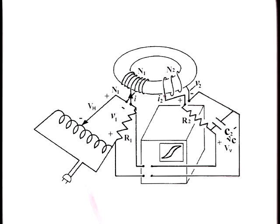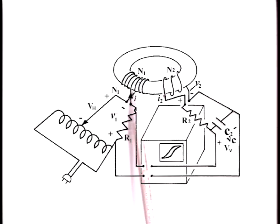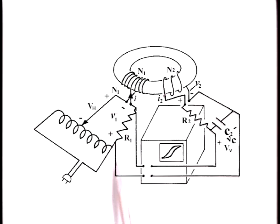Here is the excitation winding. The current is supplied by this variac. The voltage drop across the small resistance in series with the driving winding is used to record the driving current I. This voltage drives the horizontal amplifier of the oscilloscope. Because the H field is proportional to current, the horizontal scope deflection is therefore proportional to the magnetic field intensity H in the core material.